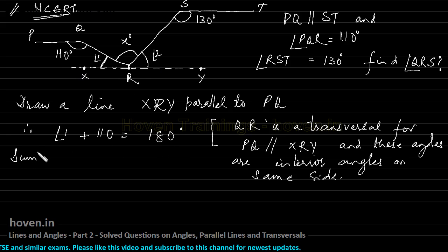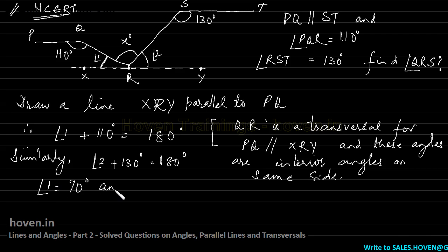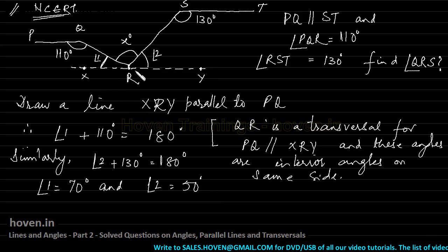And if I label this as angle 2, similarly, angle 2 plus 130 should be equal to 180 degrees. We can conclude that angle 1 is equal to 180 minus 110 will make me 70 degrees. And angle 2 is equal to 180 minus 130 will make it 50 degrees. This is what I have so far. Let us apply further reasoning now.